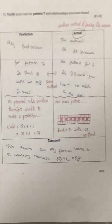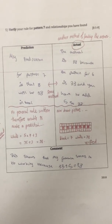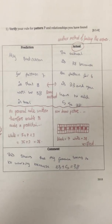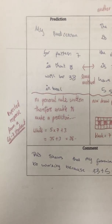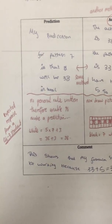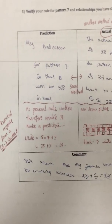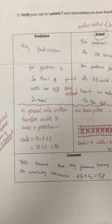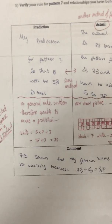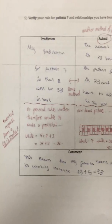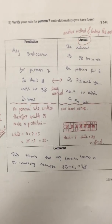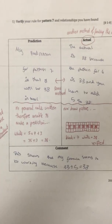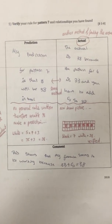This student's prediction for pattern 7 is 38, but all they did was add 5 five times — they didn't use the general rule. The correct approach should have been: using the general rule, 5×7+3 = 35+3 = 38. You cannot do the actual until you've made your prediction — that's the whole point of verifying. If a student does the actual first and then manipulates the prediction, they're technically cheating and won't receive credit.